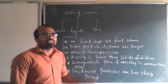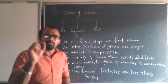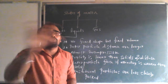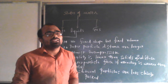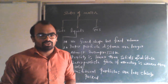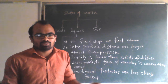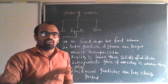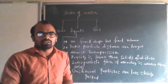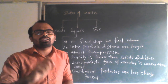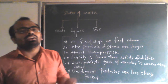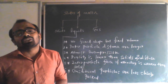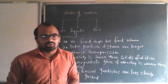First property: liquids have no fixed shape but fixed volume. Liquids do not have any fixed shape — they take the shape of the container you pour them into. For example, water does not have any shape on its own. If you put it in a rectangular container, it takes a rectangular shape; in a circular container, it takes a circular shape; in a triangular container, it takes a triangular shape.